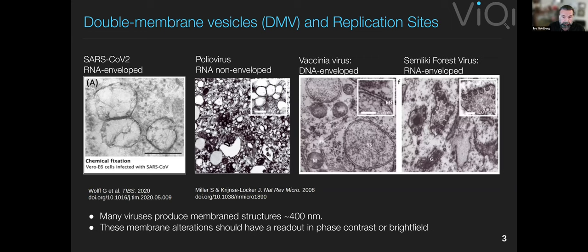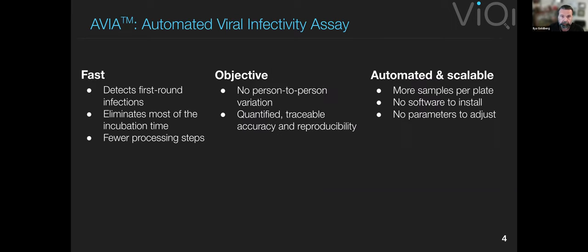All these different viruses form these structures when they infect cells. This is important because different viruses have different lifestyles depending on their genome and whether or not they have an envelope. Viruses come in with either an RNA genome or a DNA genome, and they either have a membrane envelope or not. And this effect seems to be universal across these different lifestyles.